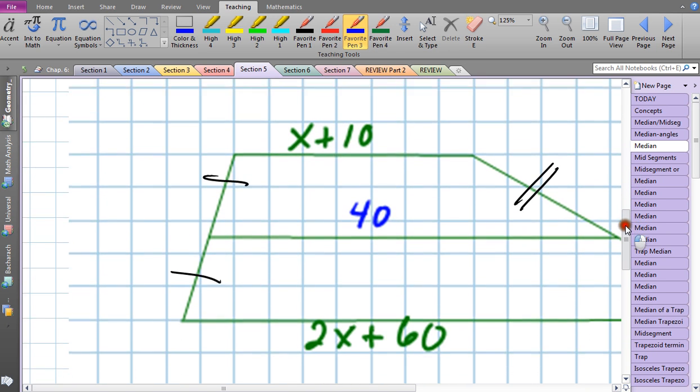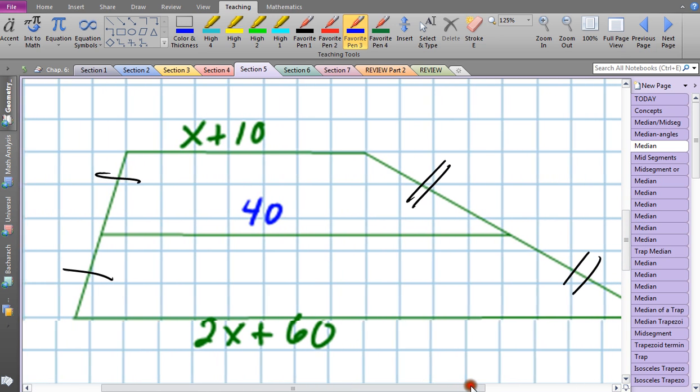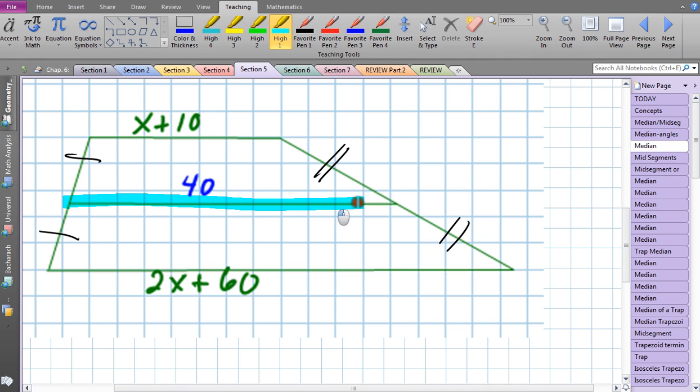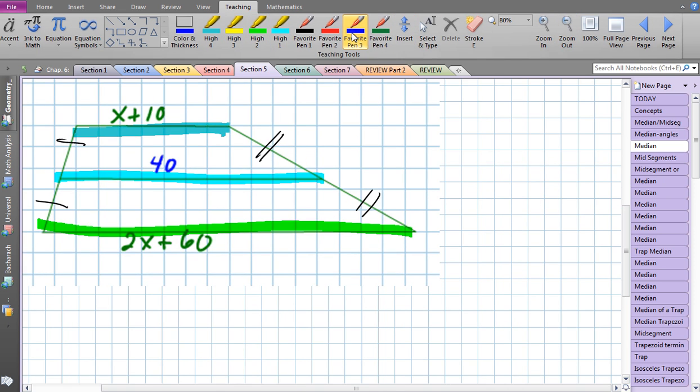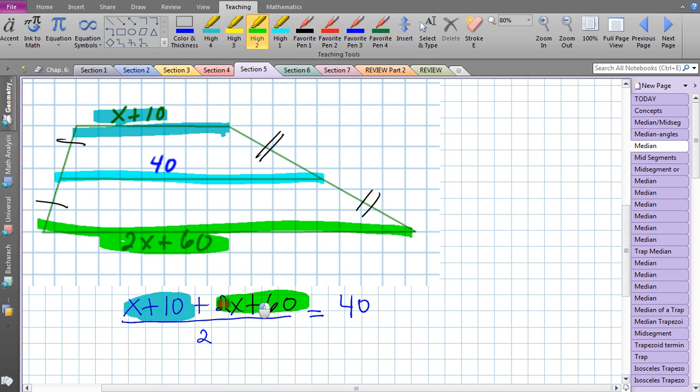Let's get a little more complicated here with our medians. This is a median, I can tell by all the tick marks. Notice what we have: we have an expression for one of the bases and an expression for the other base. I can't really see the pattern. The only number I really know is 40, so how do I set this up? You have to think averages. What's the average? I'm going to take this base, add it to the other base, divide it by 2, and that has to equal 40. The x + 10 is one side, the 2x + 60 is the other base, and when I add them together and divide by 2, it has to equal 40.